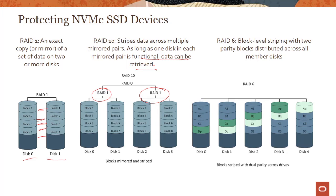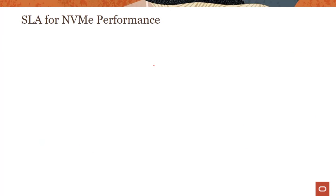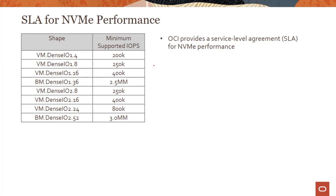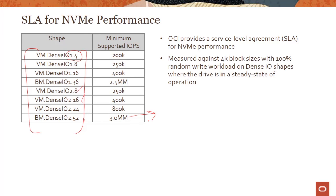Choosing between RAID 1, RAID 10, or RAID 6 is completely the customer's responsibility — we don't configure RAID out of the box. That said, we do provide SLAs for NVMe performance. Looking at the Dense IO shapes from 1.4 to 2.8 to 2.16 and so on, you can see the minimum IOPS values we support. For example, a bare metal Dense IO shape with 52 cores supports 3 million IOPS at 4K block sizes. There is an SLA when using local NVMe devices.